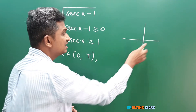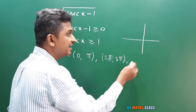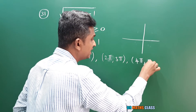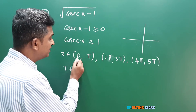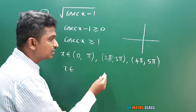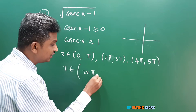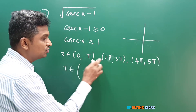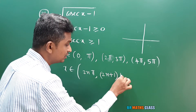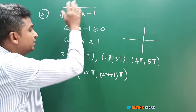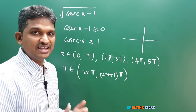The pattern continues — fifth and sixth quadrants correspond to the same as first and second quadrants, giving the interval (2π, 3π). In general, the lower bounds are even multiples of π — 0 can be written as 0×π, which is even. The upper bounds are odd multiples of π — 1×π, 3×π, 5×π — written as (2n+1)π. So the domain of this function is the open interval (2nπ, (2n+1)π) where n is an integer.